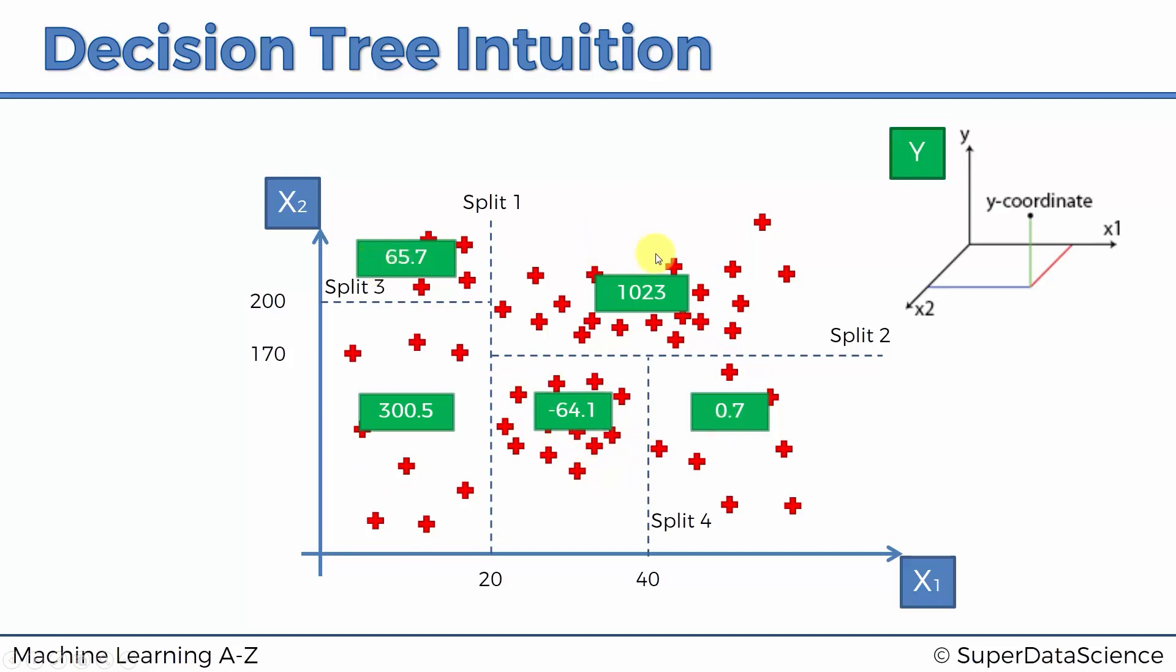If it were to fall in any other terminal leaf, then that's what the value there would predict. So as you can see, it's actually pretty straightforward. It's very simple. It's just taking averages.